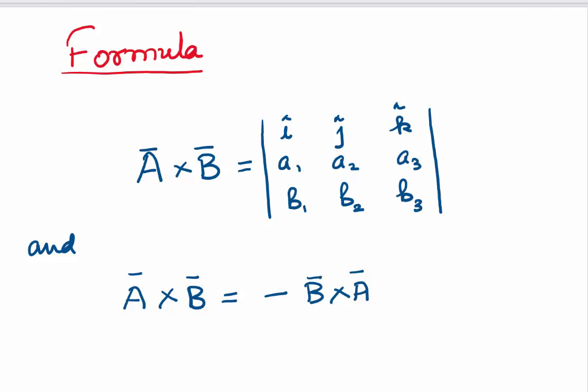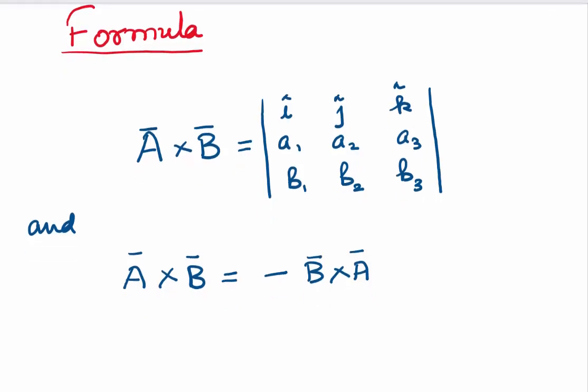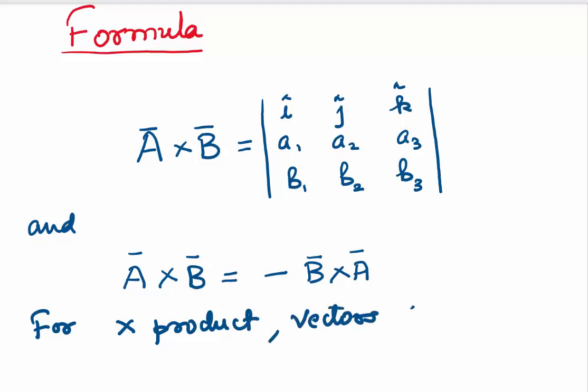Remember that A cross B equals negative B cross A — unlike the dot product, the cross product is not commutative; your sign will change. Also, the cross product can only be applied when vectors are in three dimensions, whereas the dot product can be found for vectors in the plane as well.